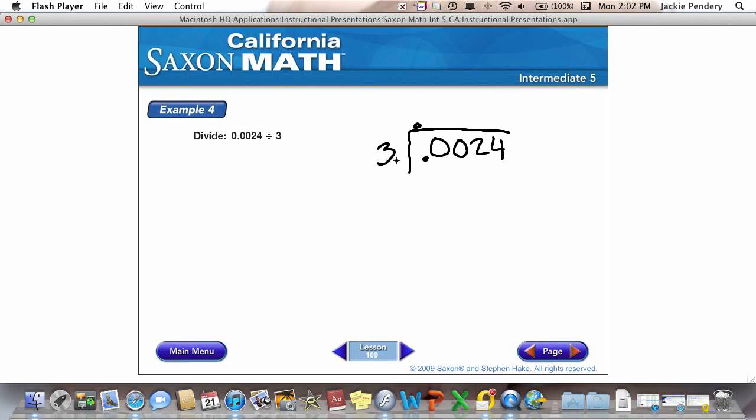Now, I can go, I know 3 doesn't go into 0. Doesn't go into 0. Doesn't go into 2. Goes into 24. And I can just put my 8 here.